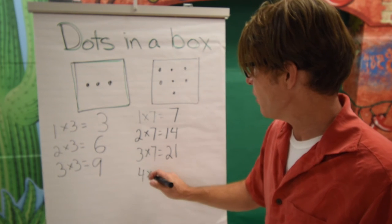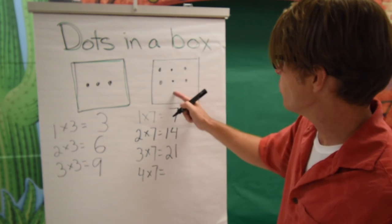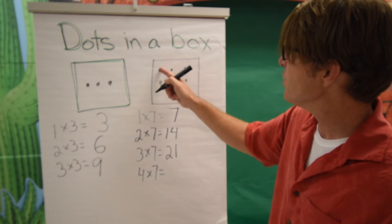Next one, four times seven. I think you guys are getting the hang of this now. Twenty-one, twenty-two, twenty-three, twenty-four, twenty-five, twenty-six, twenty-seven, twenty-eight.